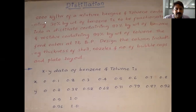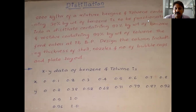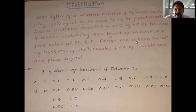Today we are going to discuss a distillation problem. 8000 kg per hour of a mixture of benzene and toluene containing 30 percent by weight of benzene is to be fractionated into a distillate containing 97 percent by weight of benzene and a residue containing 99 percent by weight of toluene. The feed enters at its boiling point.